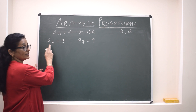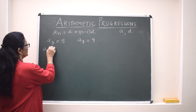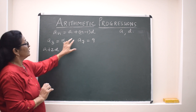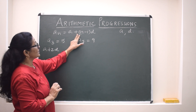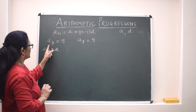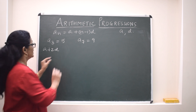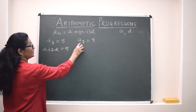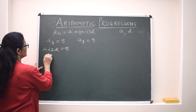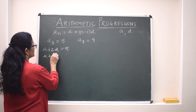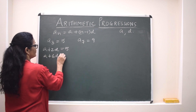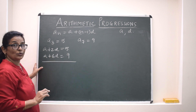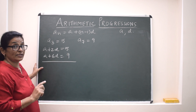For example, if the third term of an AP is 5 and the seventh term is 9, find the AP. To write any AP we require the first term and the common difference. A3, the third term, will be A + 2D according to the nth term formula, and the seventh term will be A + 6D = 9. These are two equations in two variables.